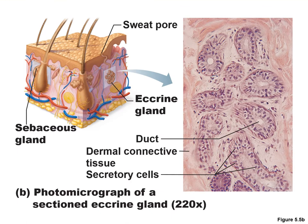This photomicrograph shows an eccrine sweat gland with secretory units lined by simple cuboidal epithelium.